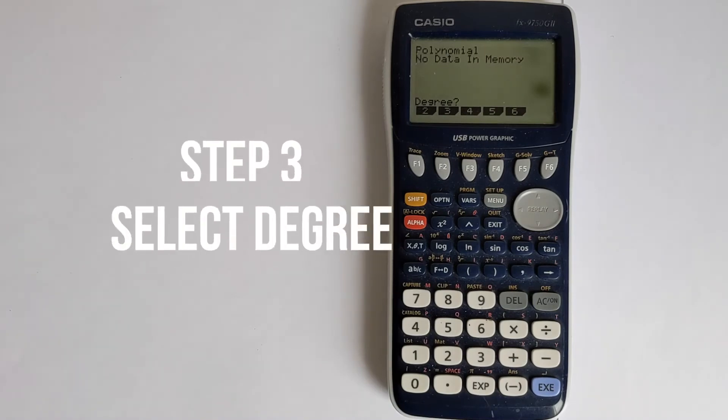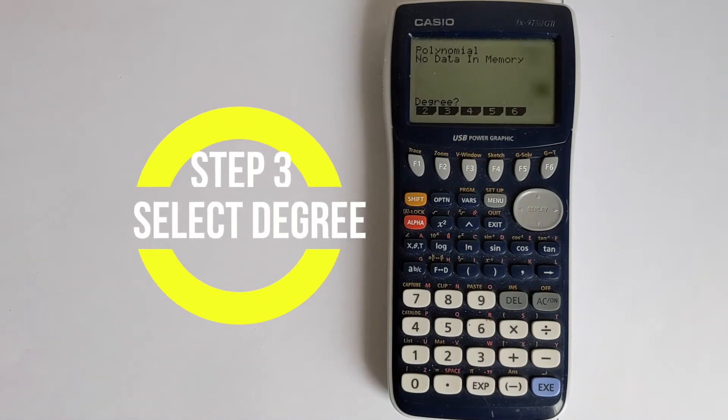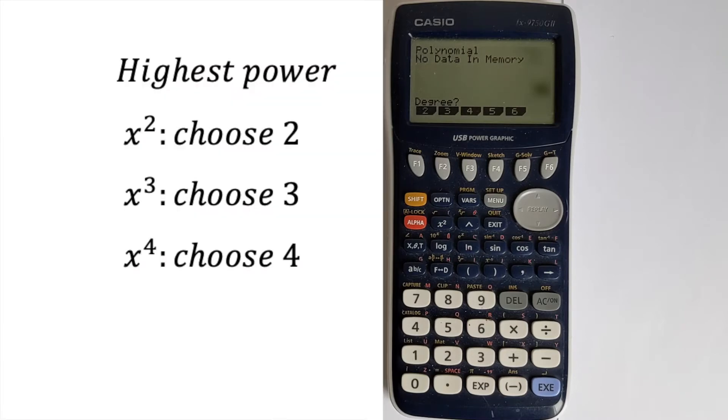It will then ask for the degree of the polynomial. To decide the degree, you need to look at the highest power of x. For example, if the largest power is squared, that would be option 2. If you had a cubed, like x³, that would be 3. If you had x to the power of 4, that would be 4.